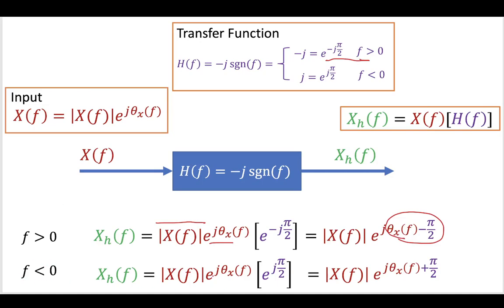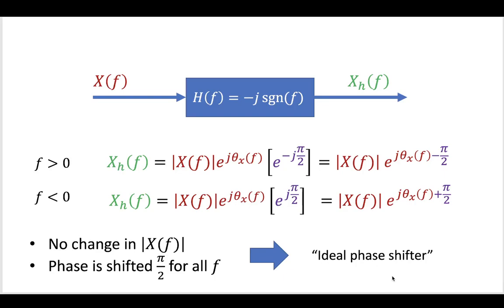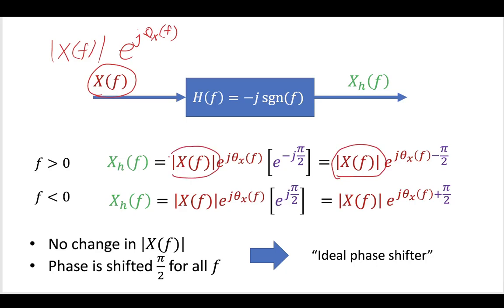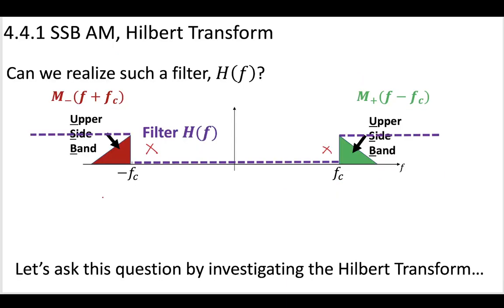What we can see now is that the Hilbert transformer is actually a phase shifter. Our input signal, which had some magnitude and some phase, enters the transfer function. The magnitude is unaffected — it is the same before and after the transfer function — but the signal has undergone a phase shift. So the Hilbert transformer is an ideal phase shifter, and the system we need to realize this filter is a phase shifting system. We're going to need to do some kind of phase shifting in order to remove these lower sidebands.